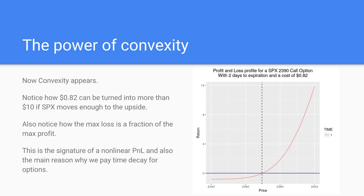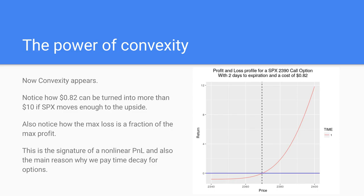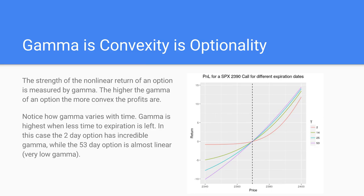That's why options are so powerful — you are buying optionality right here. You could theoretically turn 82 cents into more than $10, a 1,000% return. We are not going to discuss how likely that is; we just want to show the profile. This is a non-linear profit and loss — the loss is a fraction of the maximum profit, the maximum profit is orders of magnitude the investment, and profits grow exponentially. This plot is valid before the option expires; this is what you see if you trade the option before expiration day.